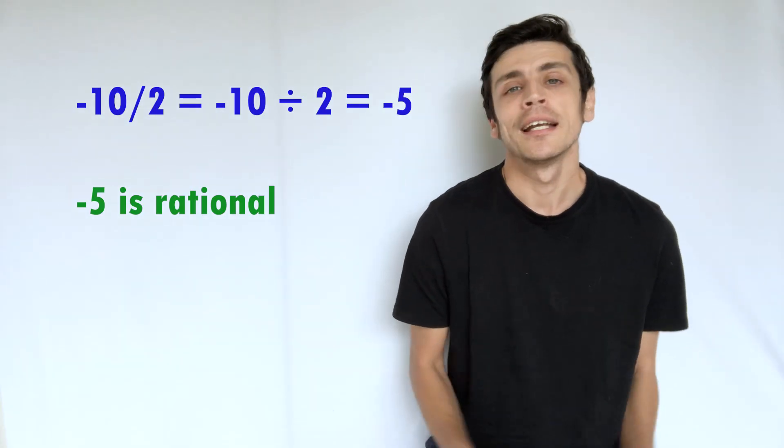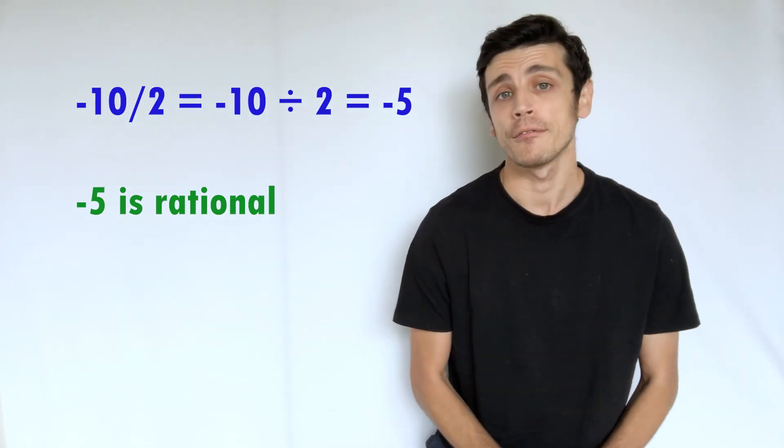And it's the same as if you have it in its negative form. So if you had like negative 5, you could have negative 10 divided by 2 and that would give you negative 5.